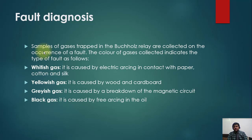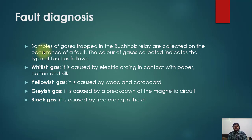To test on-site, you burn the gas and observe the flame color. A whitish flame indicates electric arcing in contact with paper, cotton, or silk. A yellowish gas indicates a fault involving wood or cardboard inside the transformer. A grayish gas indicates breakdown of the magnetic circuit. A black gas indicates free arcing in the oil.